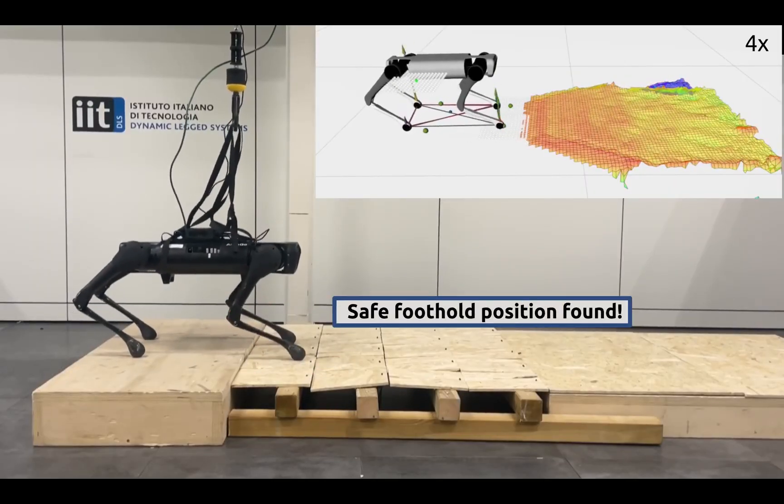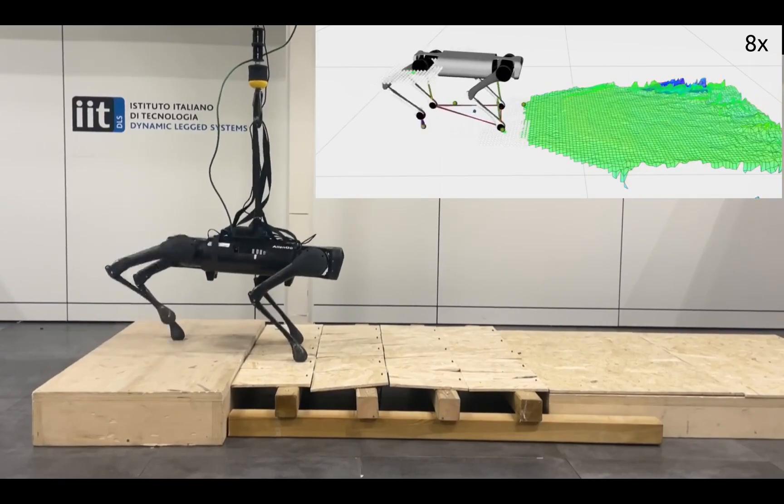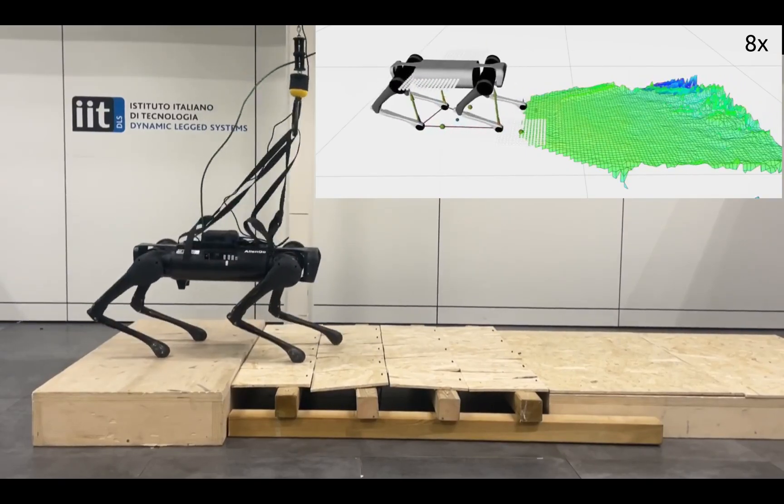We now see the robot crossing a terrain made of flippable elements, partially using blind locomotion and partially aided by vision.